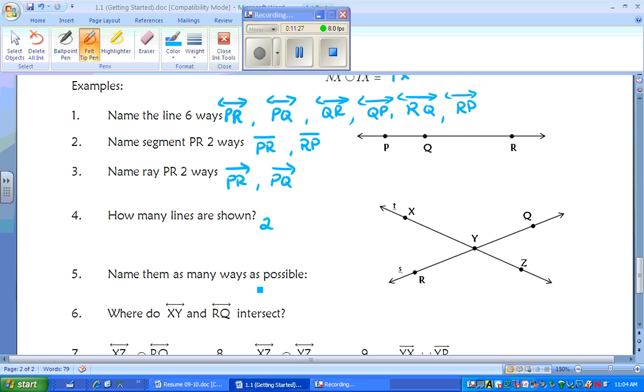Name them as many ways as possible. Okay, well, you can name them by using the letters. You can name this one by this little letter T. You can name this one by little letter S. And then you can figure out how many you can name with the letters. There's a total of 14 possible.